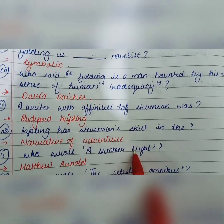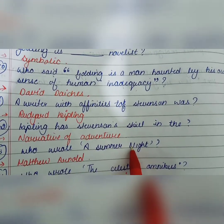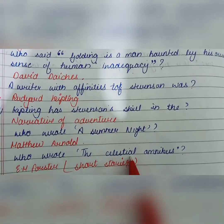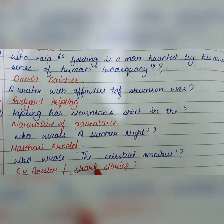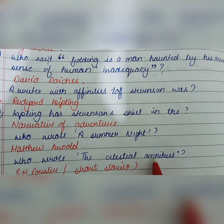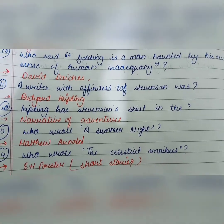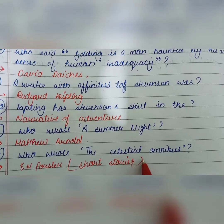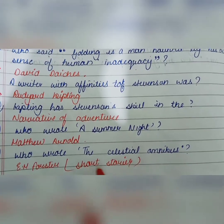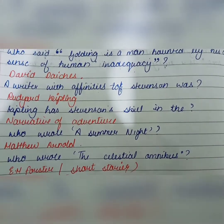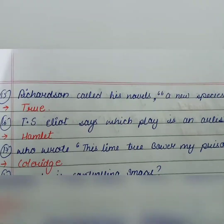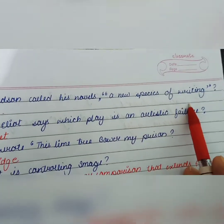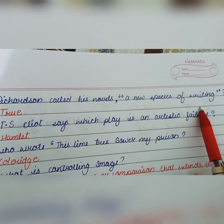Who wrote 'A Summer Night'? That is Matthew Arnold. Who wrote The Celestial Omnibus? That is E.M. Forster. The Celestial Omnibus is a short story — it is a collection of short stories.